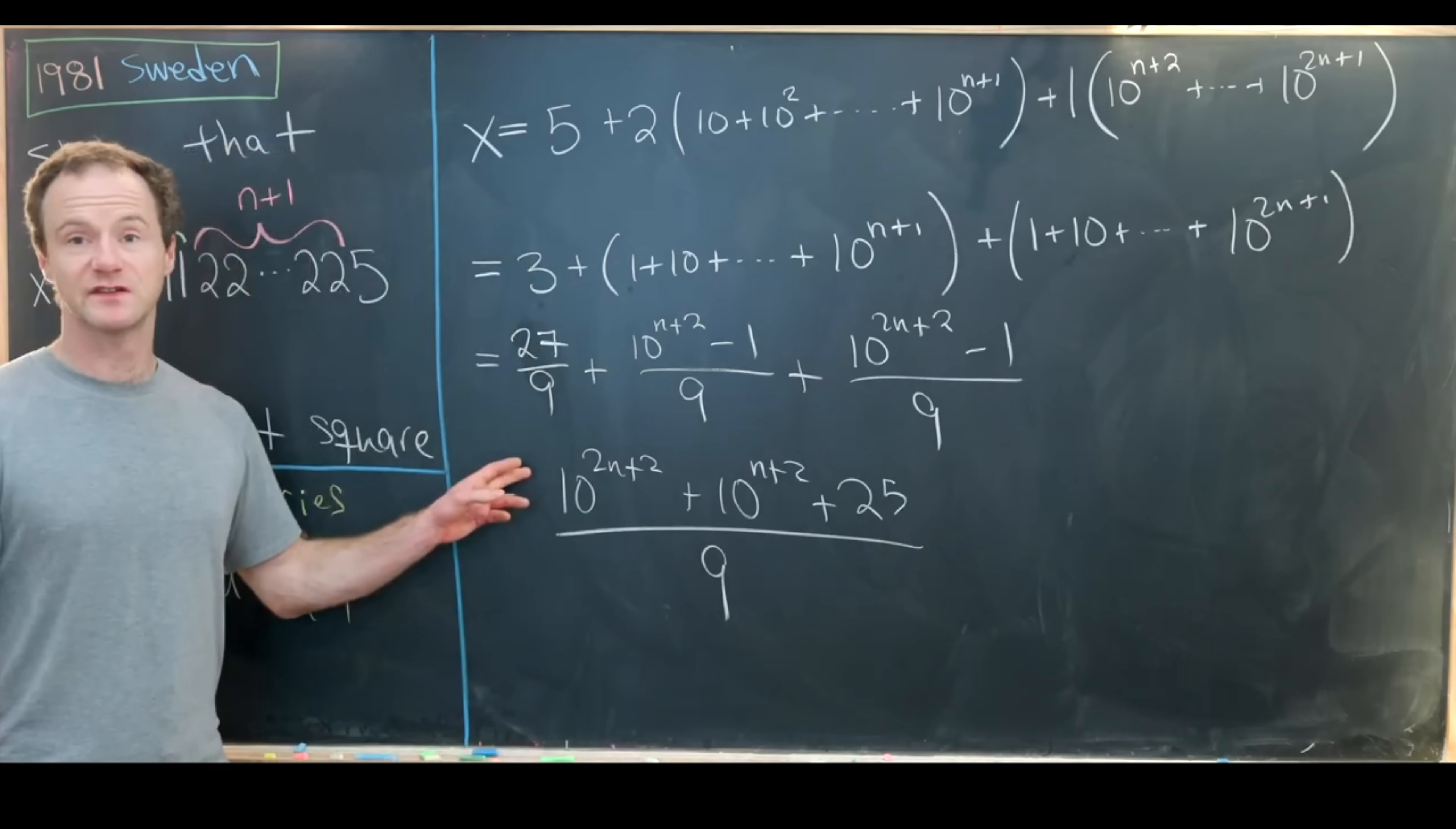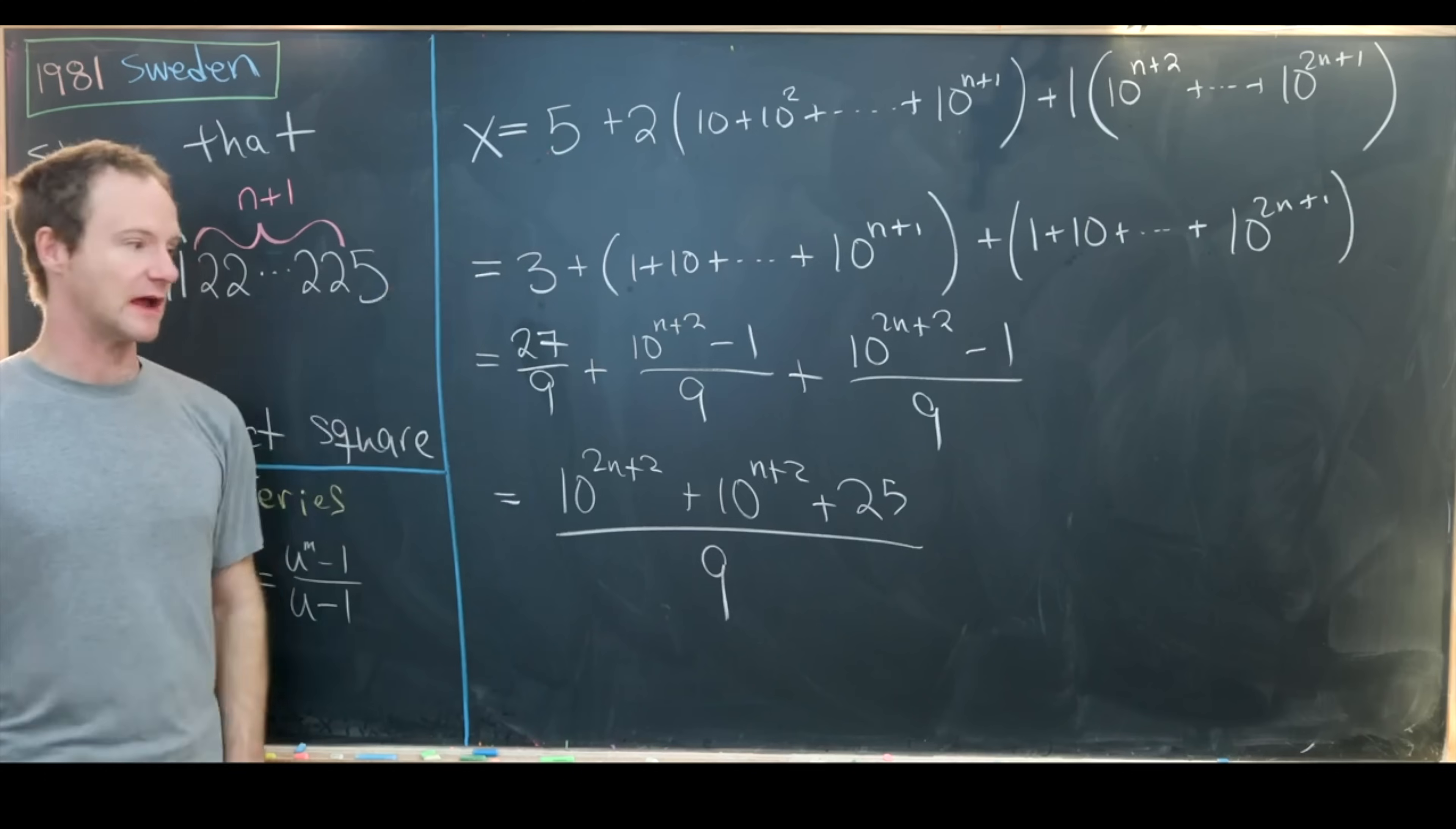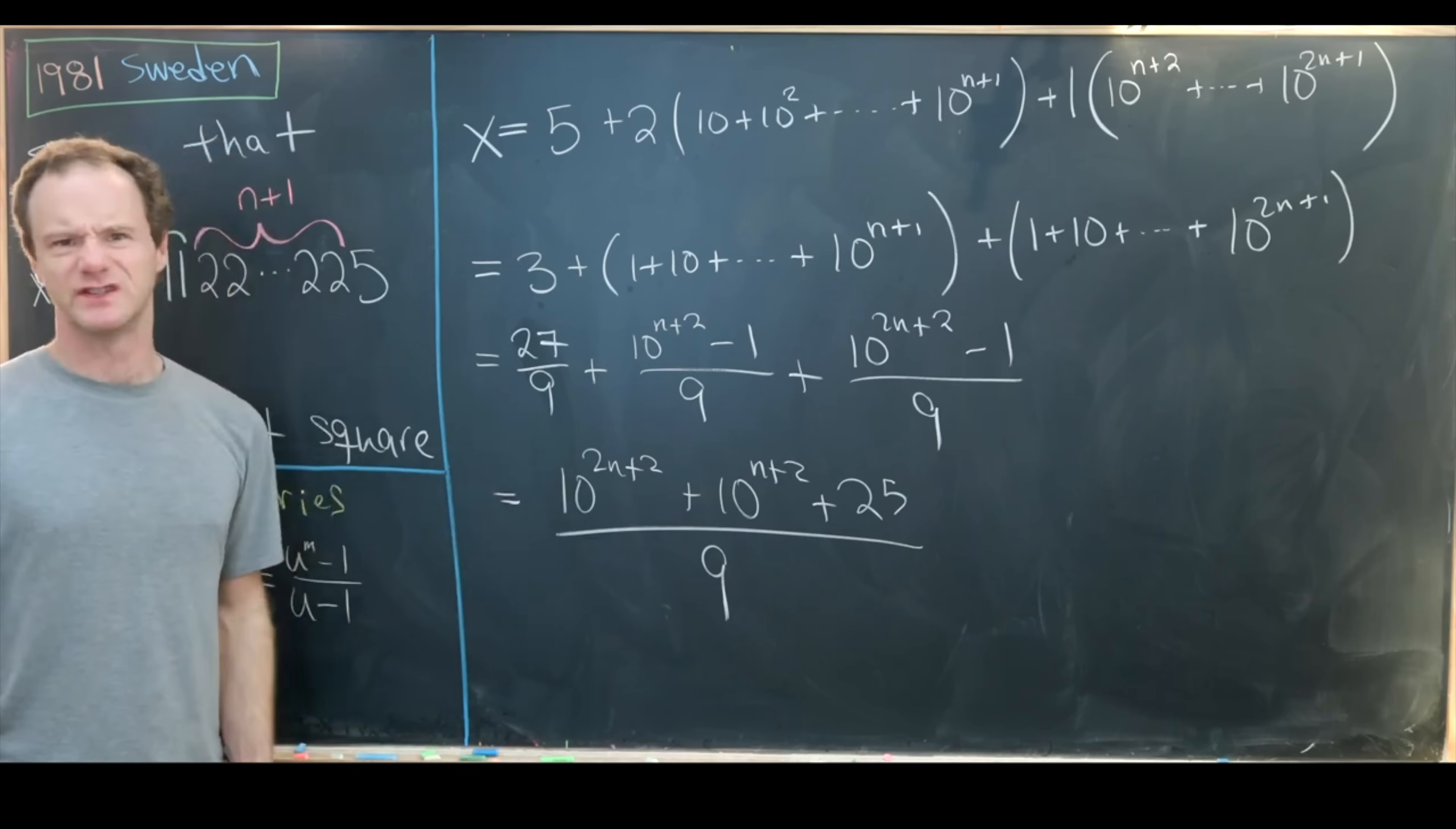So if we can factor this numerator as a perfect square, we're done, and that's because we know that this must be a whole number just by the way that it's constructed. And so when we divide out by 9, we don't turn it into a rational number. It will still be a perfect square.